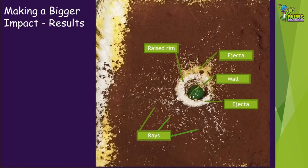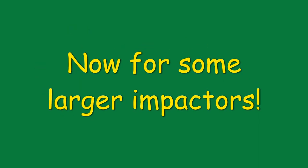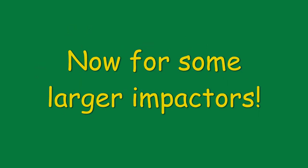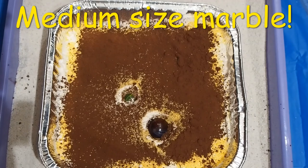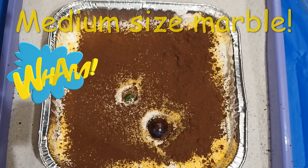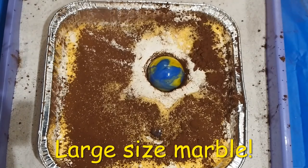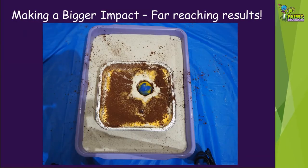In this photo we can clearly see the rays of ejected material spread around the crater, as well as polenta and flour brought to the surface as ejecta. There is a raised rim around our deep crater and a clear wall. Let's try with the larger impactors — we've left the previous impactor in there to try not to disturb the surface too much. As you can see from this photo, the rays of ejecta thrown out when an impactor hits the surface can reach out a long way.